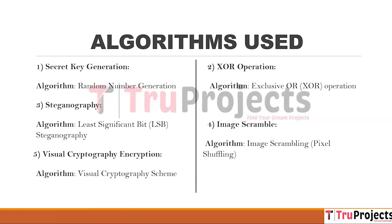These are the algorithms used. First, for secret key generation, a random number generation algorithm is used to create a secret key. The secret key plays a vital role in the encryption process and is required to perform XOR operations on the input message. Next, for the XOR operation, the exclusive OR (XOR) operation is used.